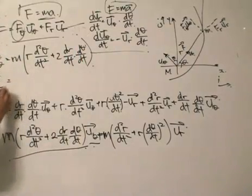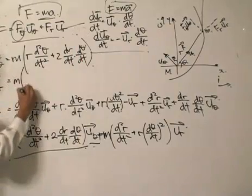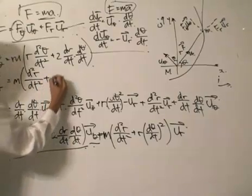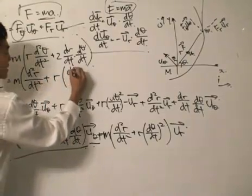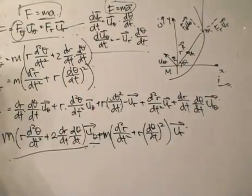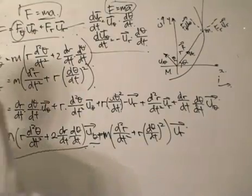And then the F_R scalar multiple again is equal to mass times d²R/dt² plus R dθ/dt squared. And there we go, these two are what we call, if I'm not wrong, the equations of motion.